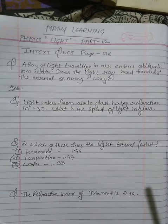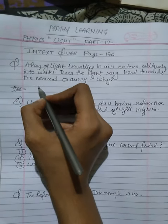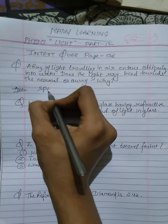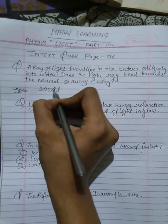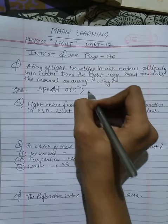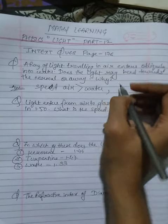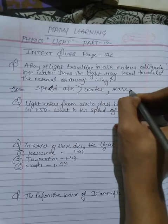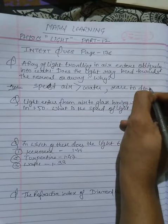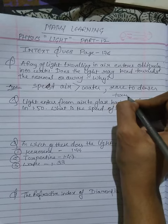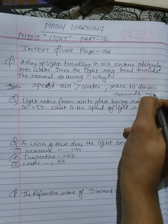So there are two reasons. First, the speed of light in air is more than in water. Second, air is a rarer medium and water is a denser medium. Therefore, the light bends towards the normal.